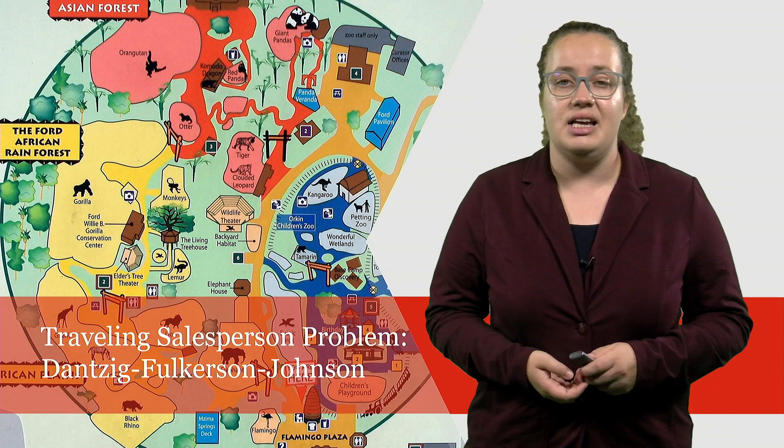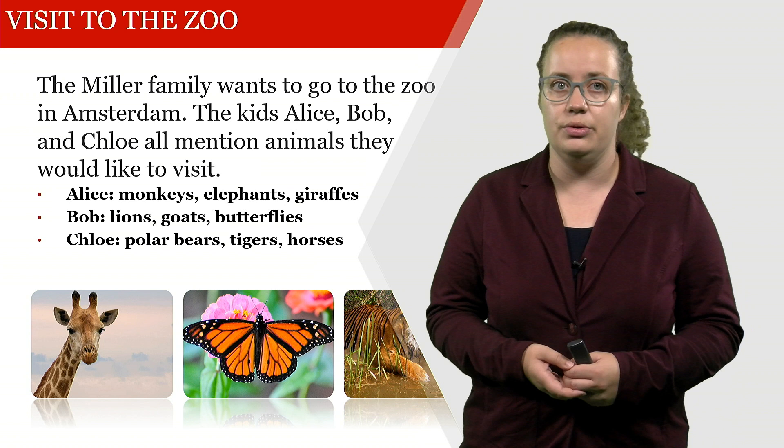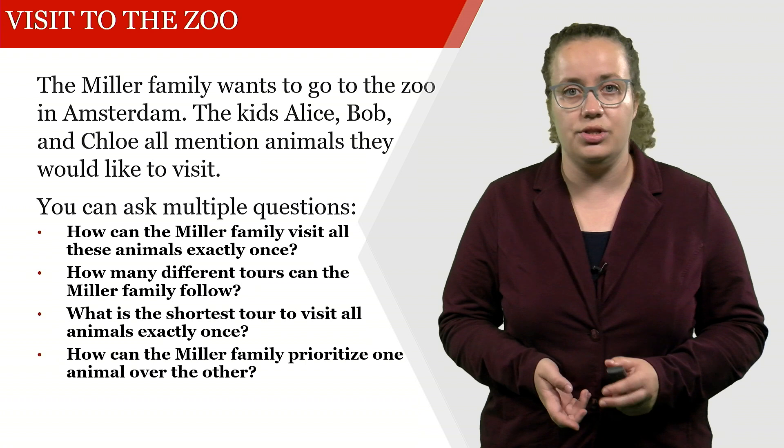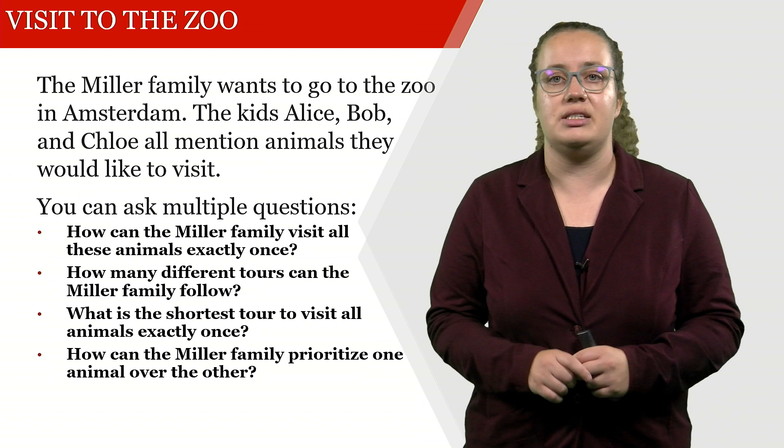So within this example, we were looking into the Miller family. The Miller family really wants to go to the zoo and their kids actually mentioned a list of nine animals that they would really like to see. The Miller parents are now trying to find the shortest tour to visit all animals exactly once, hoping that their kids don't have to walk that much and that they eventually also make it back out of the zoo.